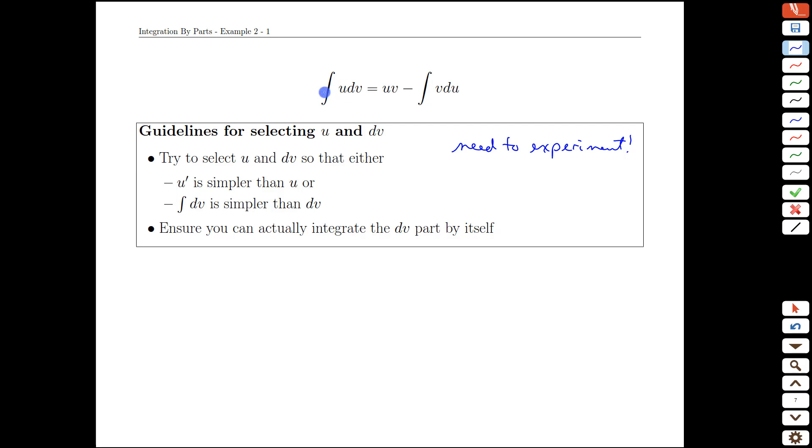So if you're intellectually honest with yourself when you go through these processes and recognize when you've made an error or something that's not helping, take a step back, try a different u and a different dv. That is actually the most effective way to get some insight into what works and what doesn't work.